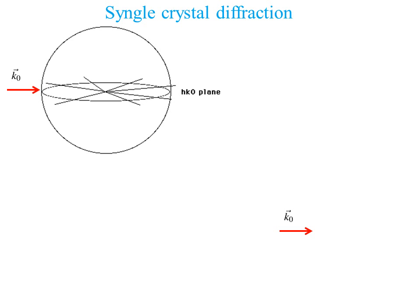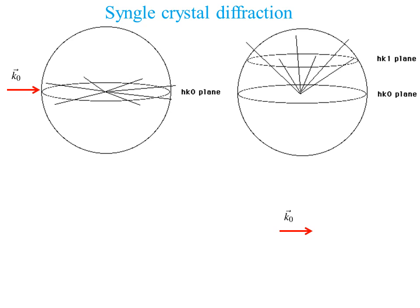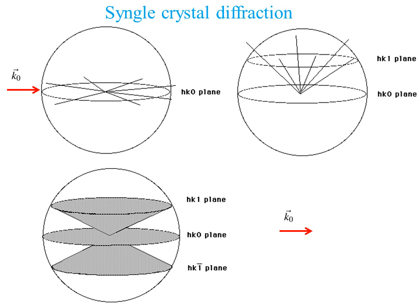If we imagine a three-dimensional crystal, the incident beam K0 arrives at the HK0 plane and we can have different diffraction directions shown by the lines. For an HK1 plane, with the same incident beam, some points will touch the sphere as we rotate around our fixed origin point, giving diffracted beams in different directions. The same applies for the HK−1 plane. This defines cones within which we find diffraction spots.